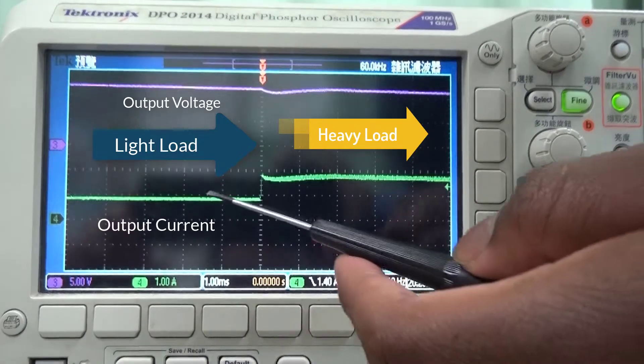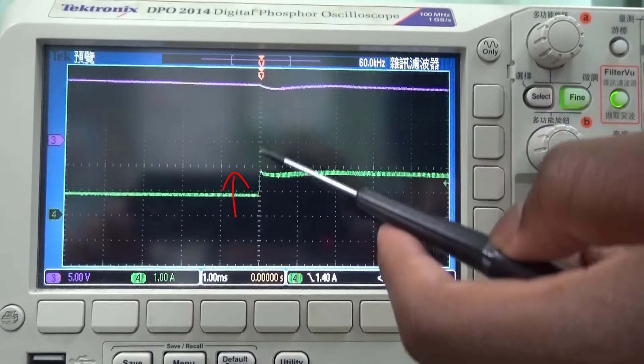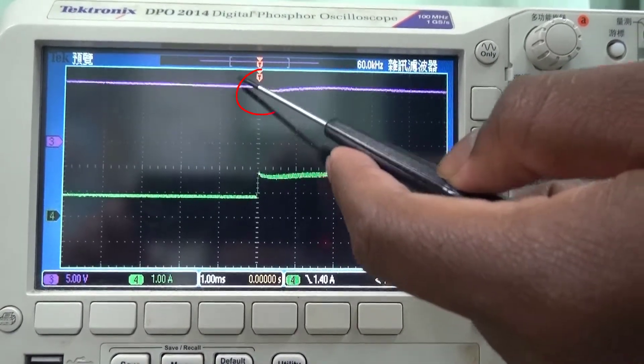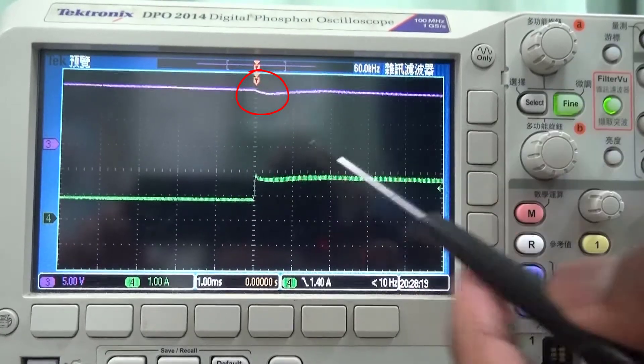We can see in the reverse situation moving from a light load to a heavy load. As the current increases at this point in time, there is a slight drop in the output voltage as seen here.